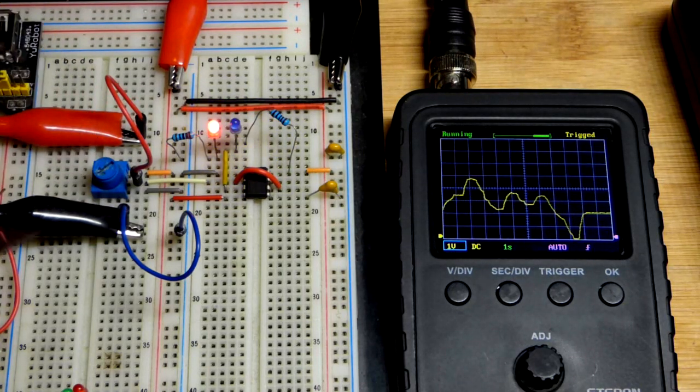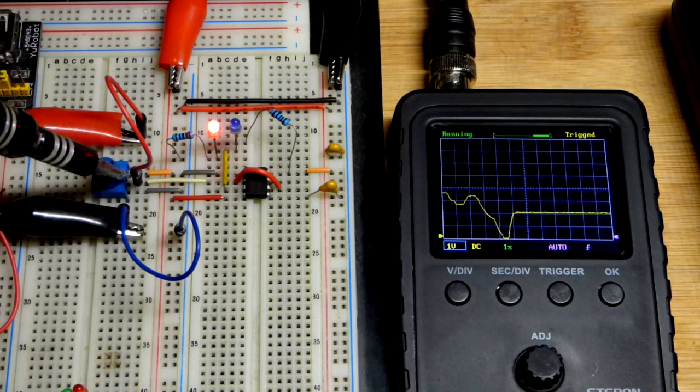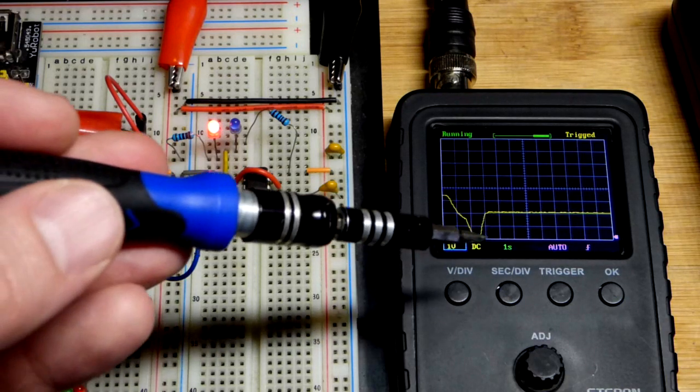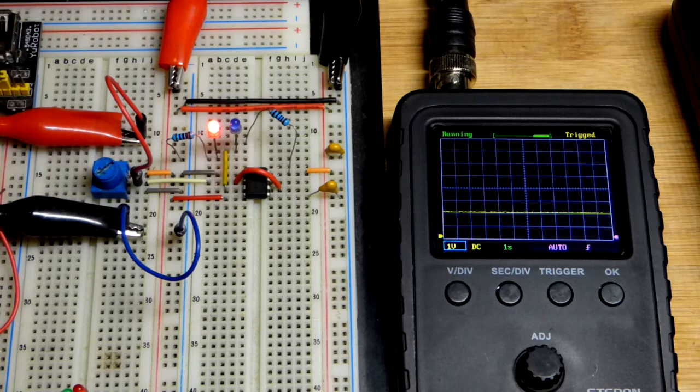So this is a 555 timer, wired as a Schmitt trigger, and it's being controlled by a trim pot, which is a variable voltage divider that you set based on where you turn the dial.